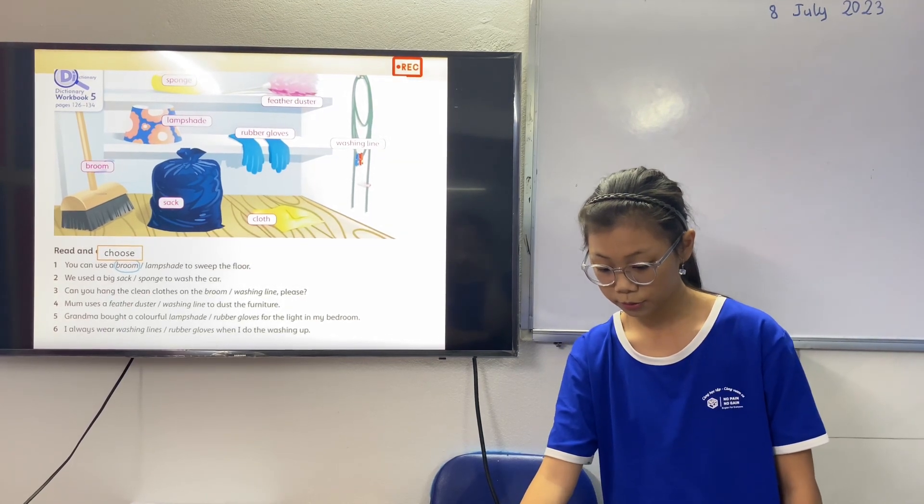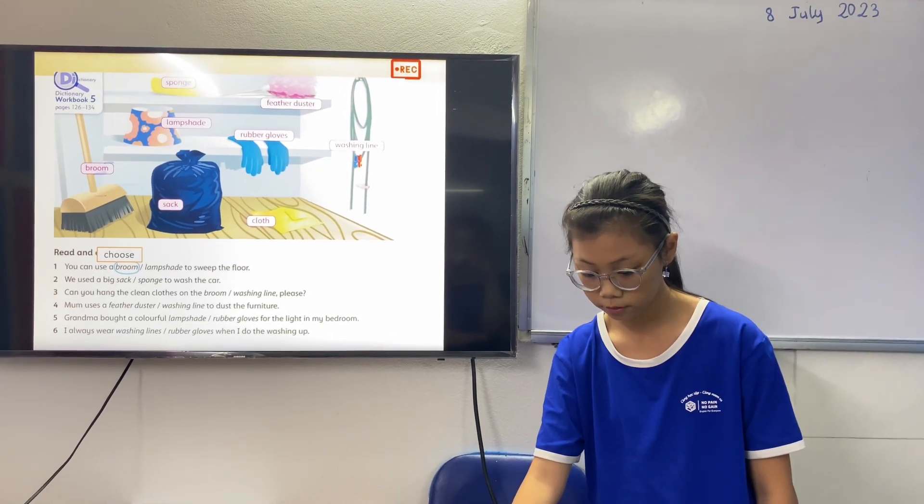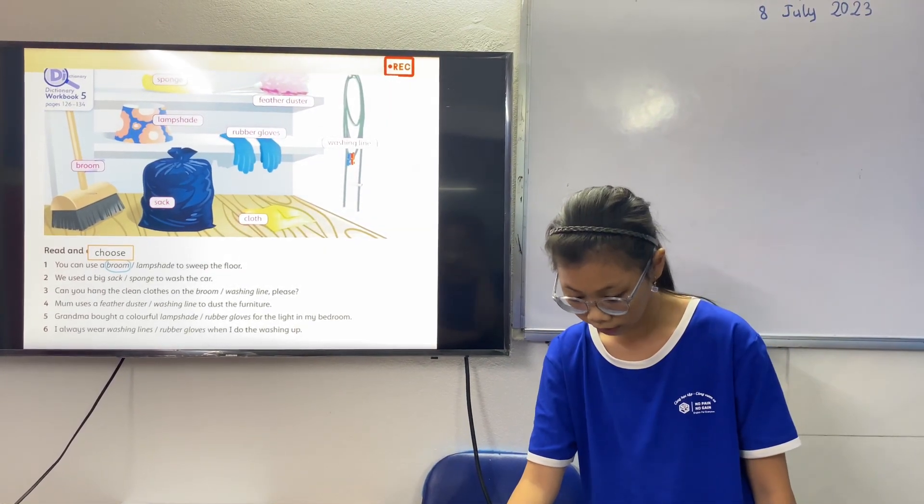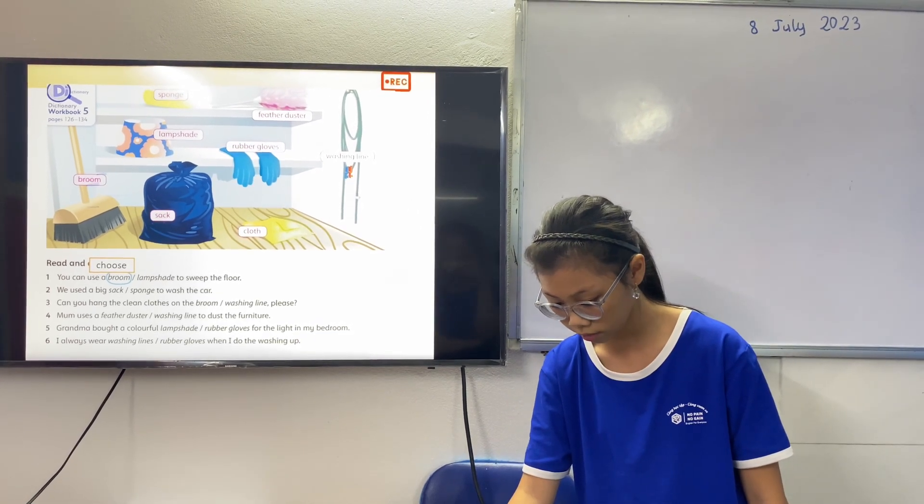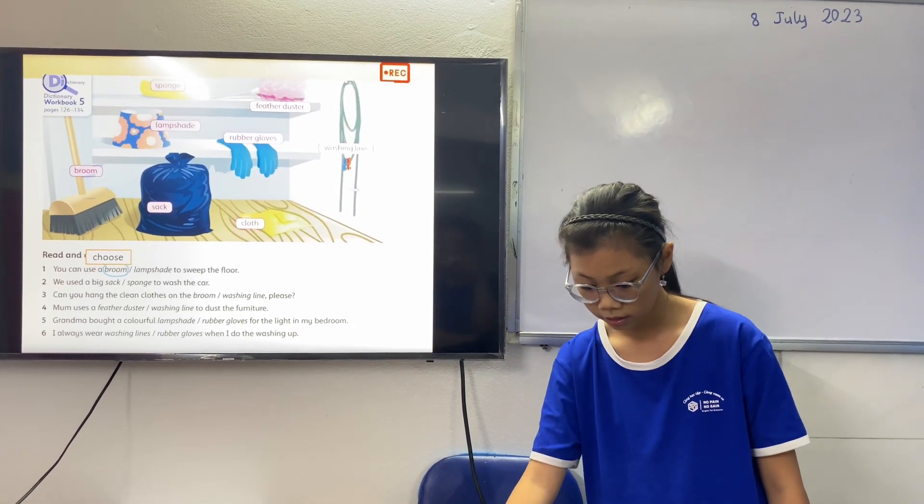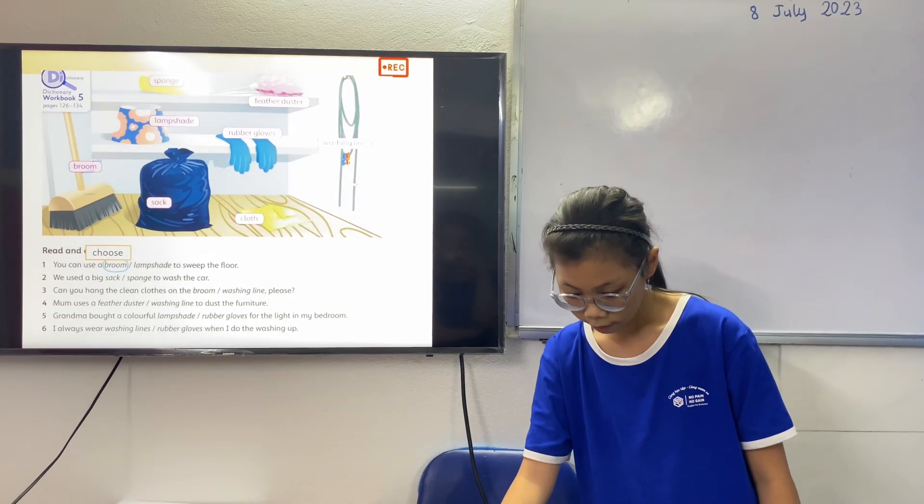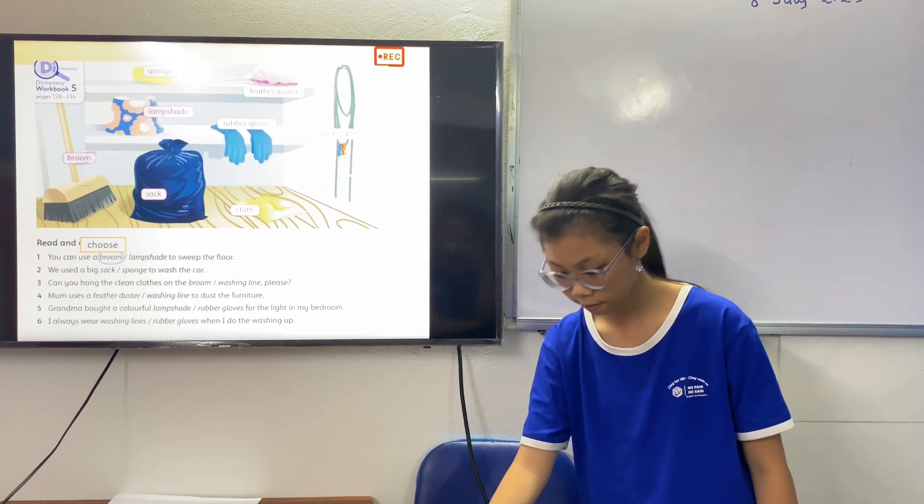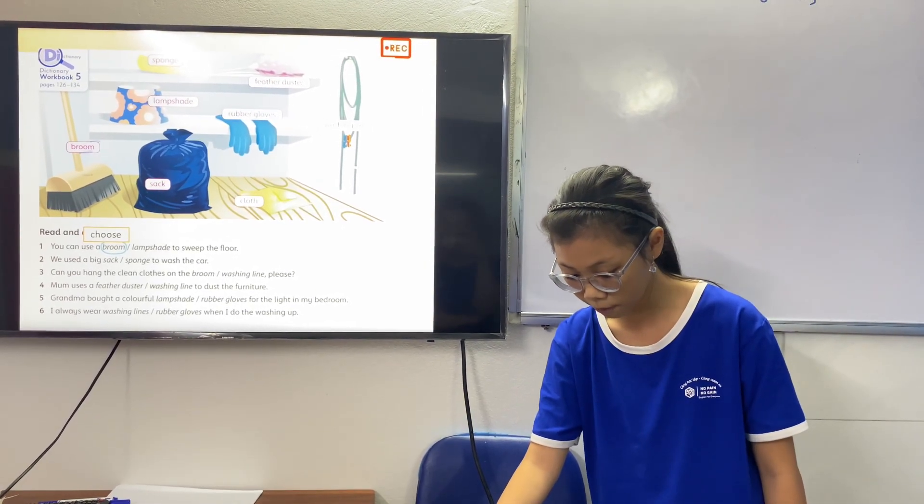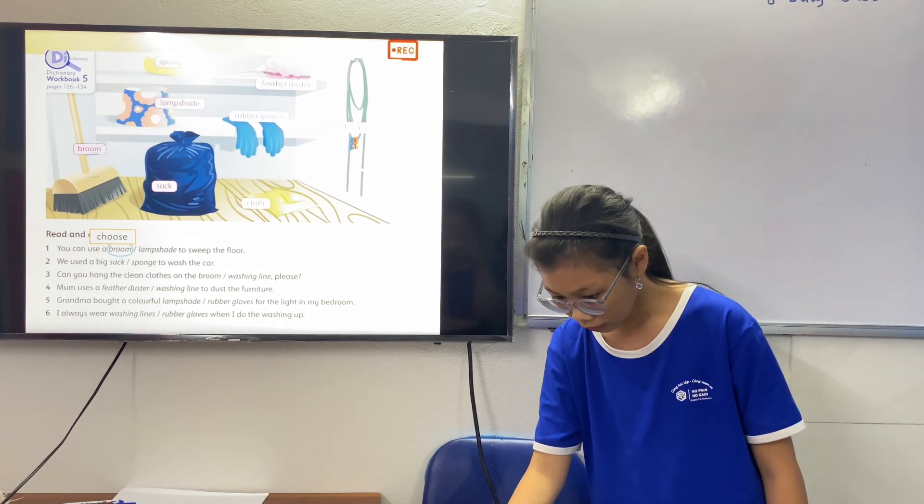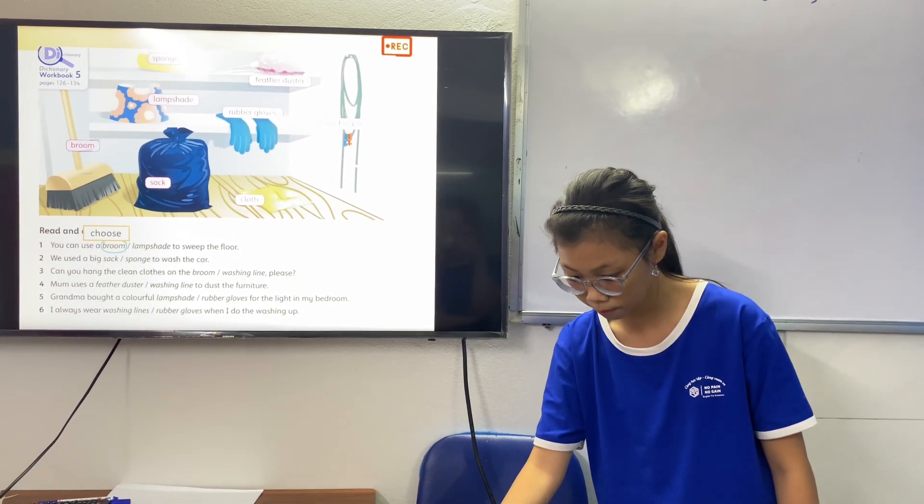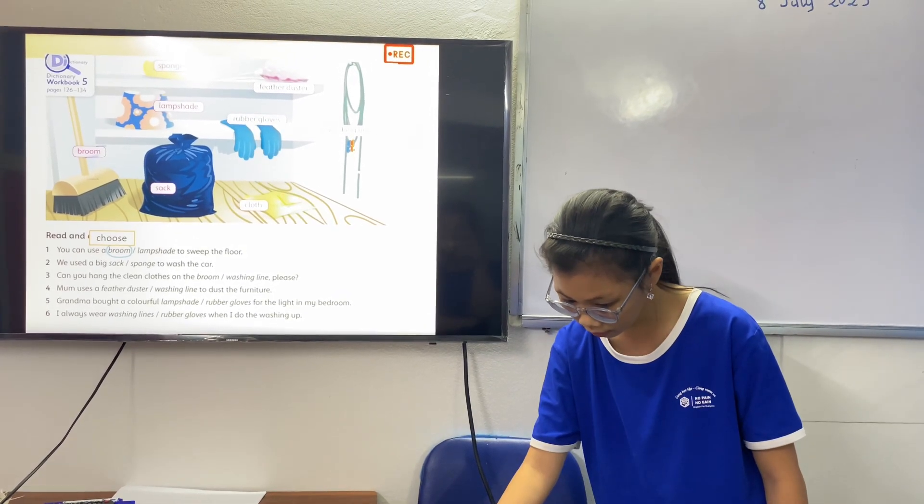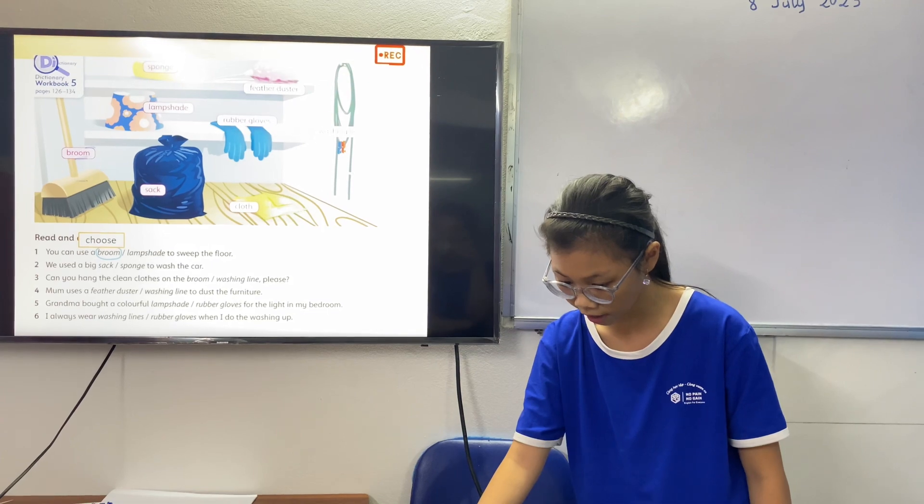You can use a big sponge to wash the car. Can you have the teeth cleaned or clothes on the washing line? Mom used a cloth duster to dust the furniture. Grandma bought a colorful lampshade for the light in my bedroom. I always wear gloves when I do washing up.